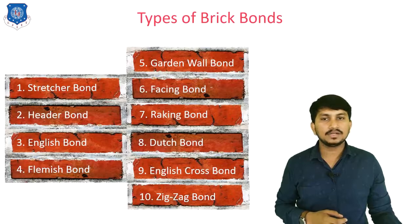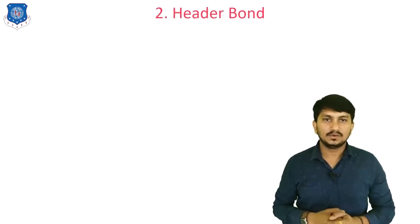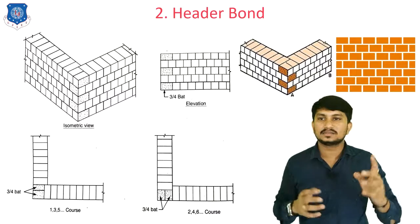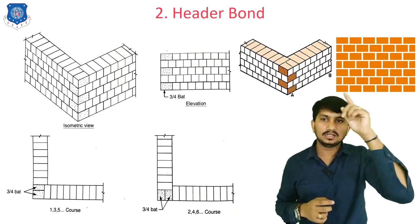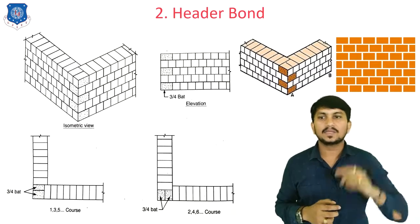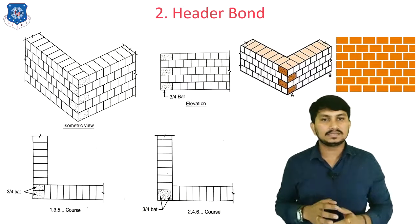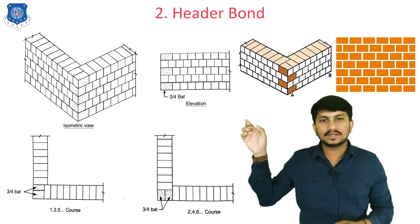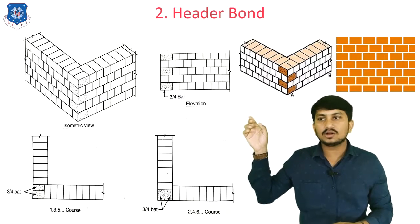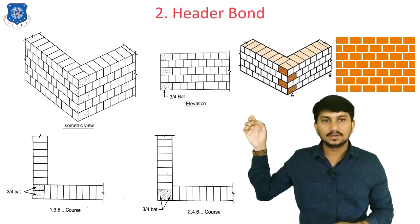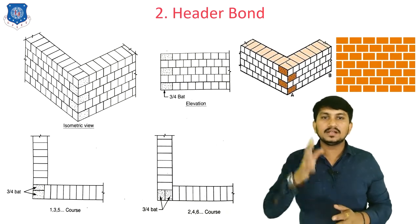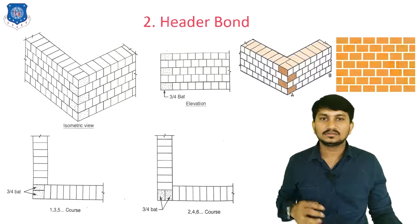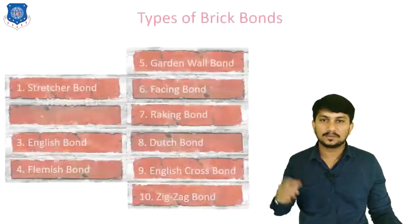The second type of bond is header bond, where all the layers are made with headers. To avoid vertical joints falling in one line, three-quarter bats are provided at the corners of the wall. This is called header bond.